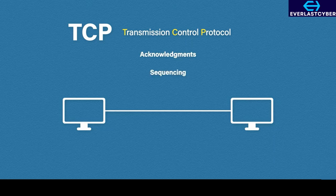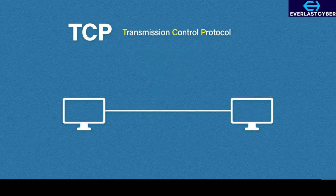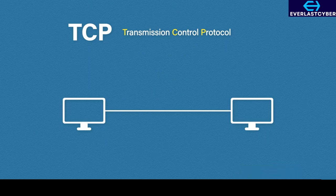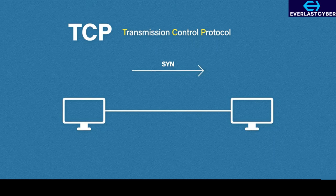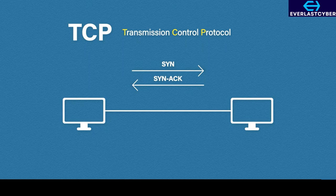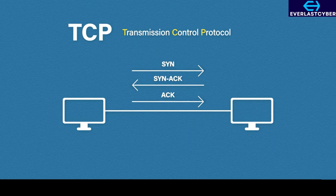First, it uses acknowledgement numbers. Secondly, it uses sequence numbers. Then, TCP adds a checksum. But before any of that can happen, we need to first start a reliable connection. TCP does this by using what is called a three-way handshake. The sender computer sends a message called a SYN, which is short for synchronize. Then the receiving computer replies with an ACK message — short for acknowledgement — and it also includes a SYN message of its own, so this message is called a SYN-ACK. Lastly, the sending computer acknowledges with an ACK message, and that is when we have an open TCP connection. A similar process is also followed when closing this connection down.